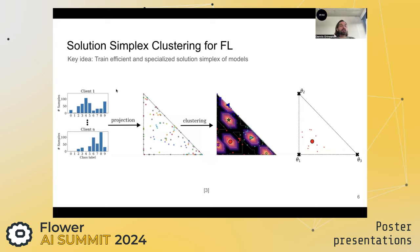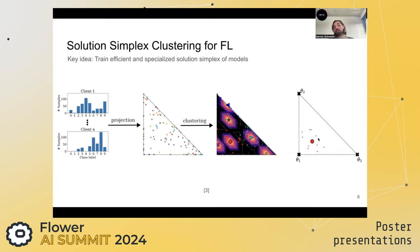Our method works as follows. First, we define which client statistics we will use for clustering. Then we project these client statistics into our trained simplex — in our case using latent Dirichlet allocation. Given a certain distance function, we cluster within the simplex using Hilbert simplex clustering. Once we have determined cluster centers and cluster regions, we can assign a new projected client either the cluster center for inference, or during training, sample multiple models uniformly from the cluster region to train our simplex.